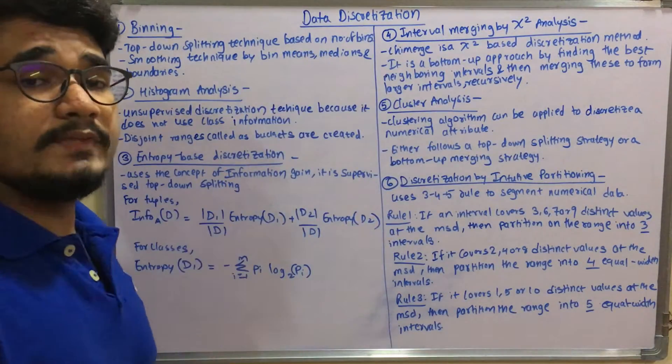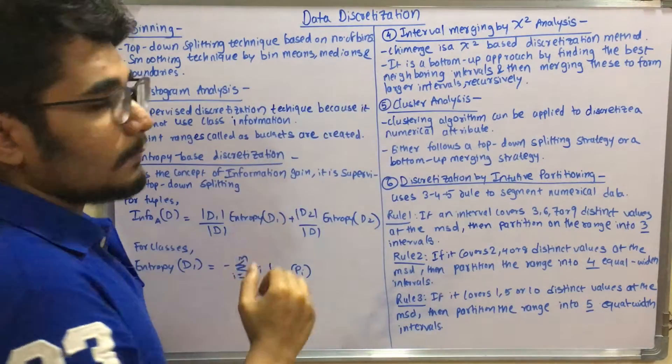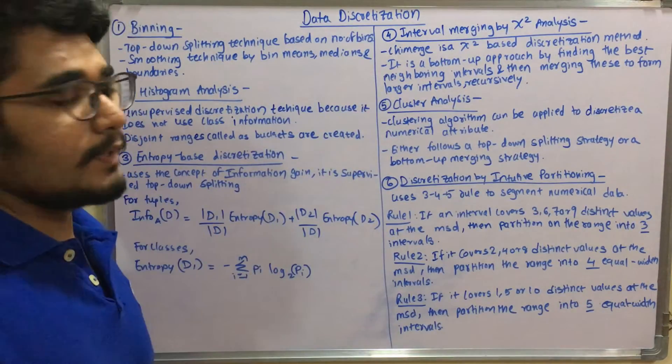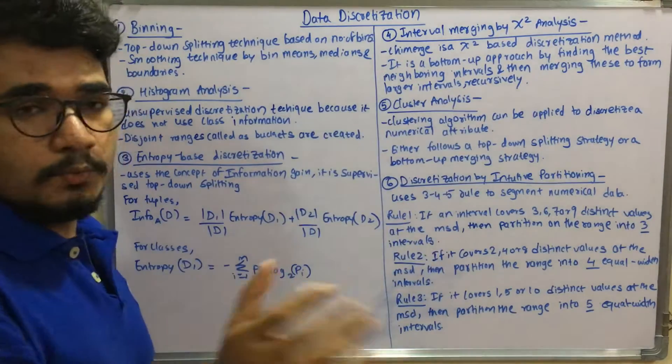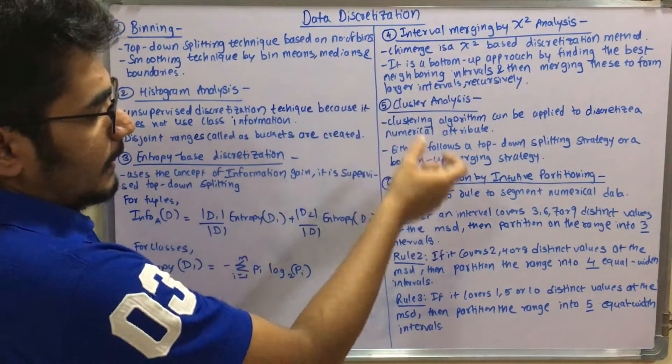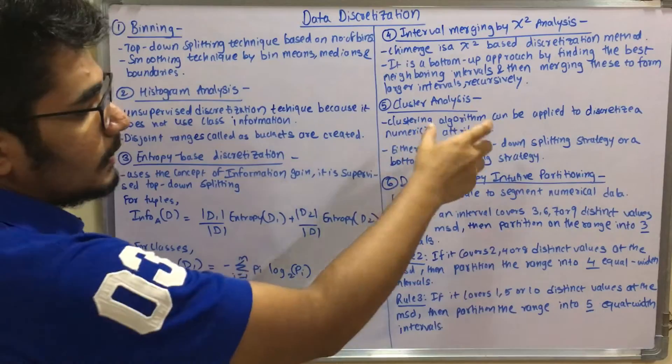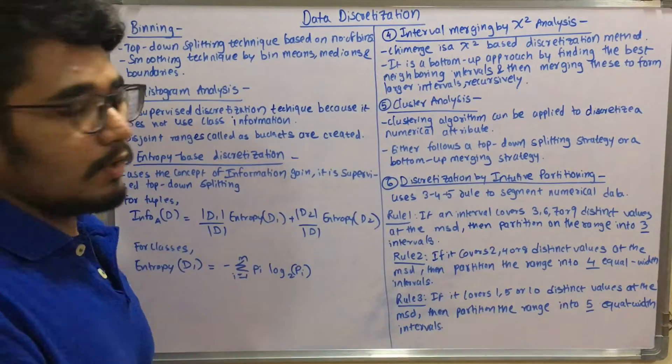Next you have cluster analysis. It uses some kind of clustering algorithm, agglomerative clustering and all, and can be applied to discretize a numerical attribute. It can either follow a top-down splitting approach strategy or a bottom-up merging strategy.